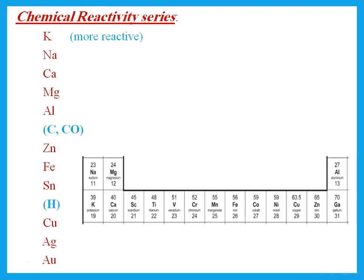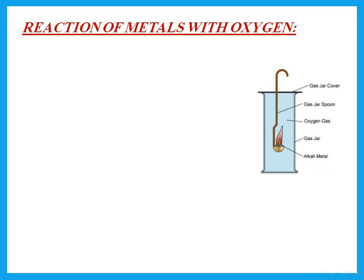We need to remember the reactivity series. Even without knowing it fully, any metal in Group 1 is more reactive than Group 2; Group 2 is more reactive than Group 3, and Group 3 is more reactive than the transition metals. The one lower down is more reactive than the one above it. We need to know reactions of metals with oxygen.